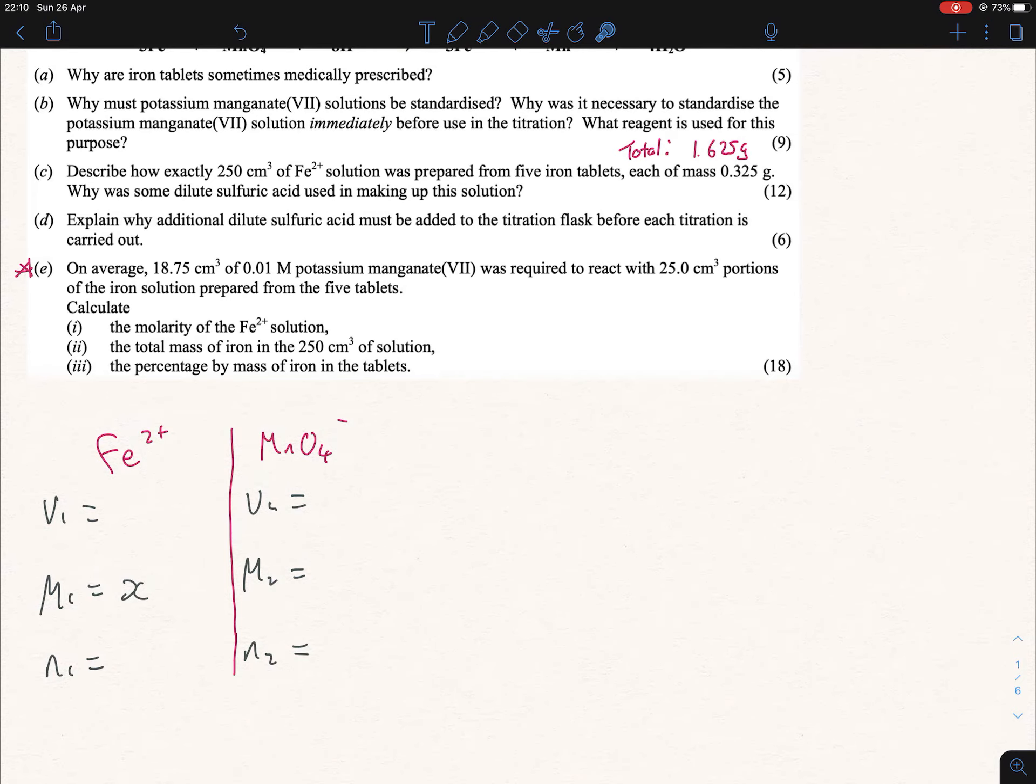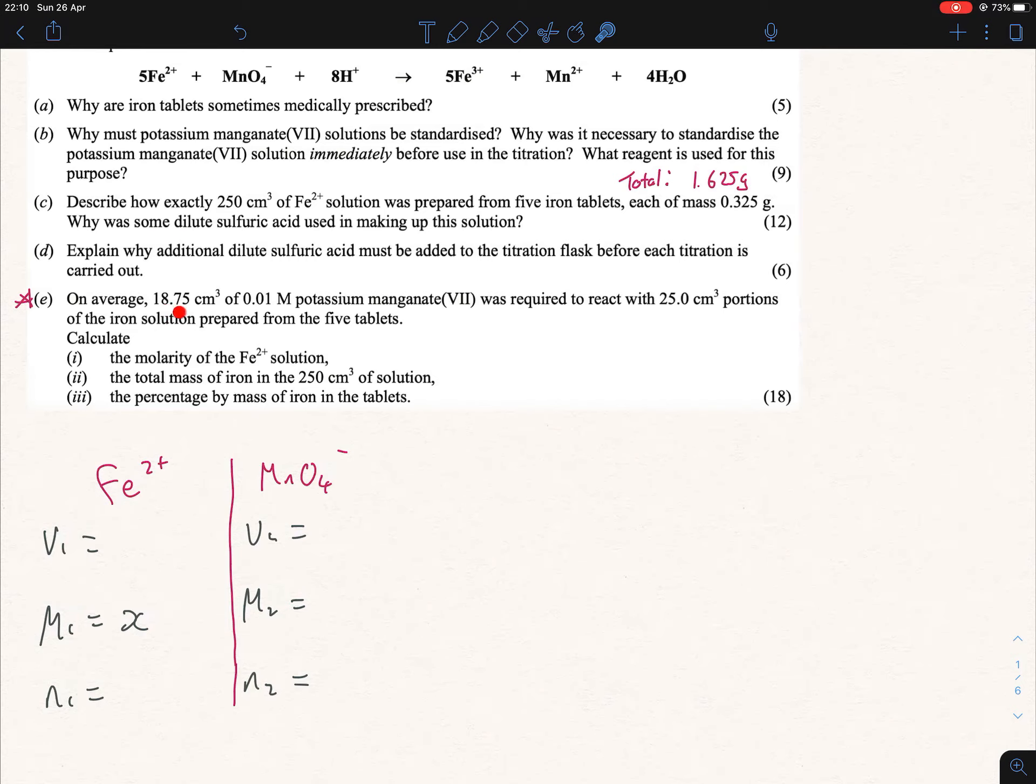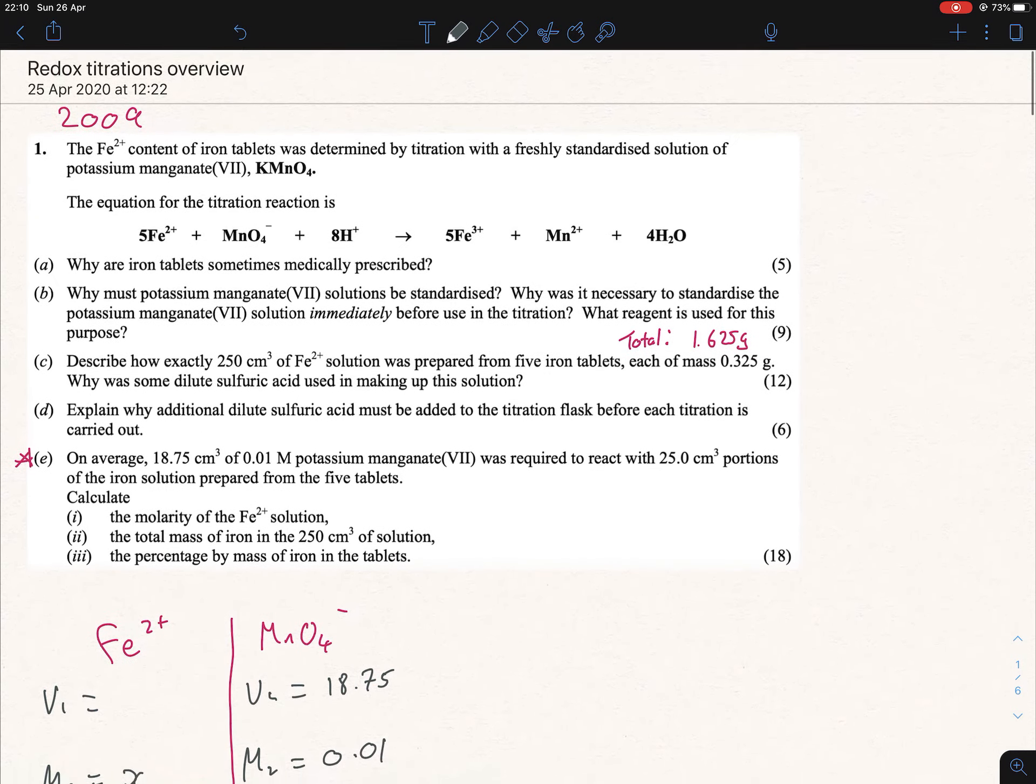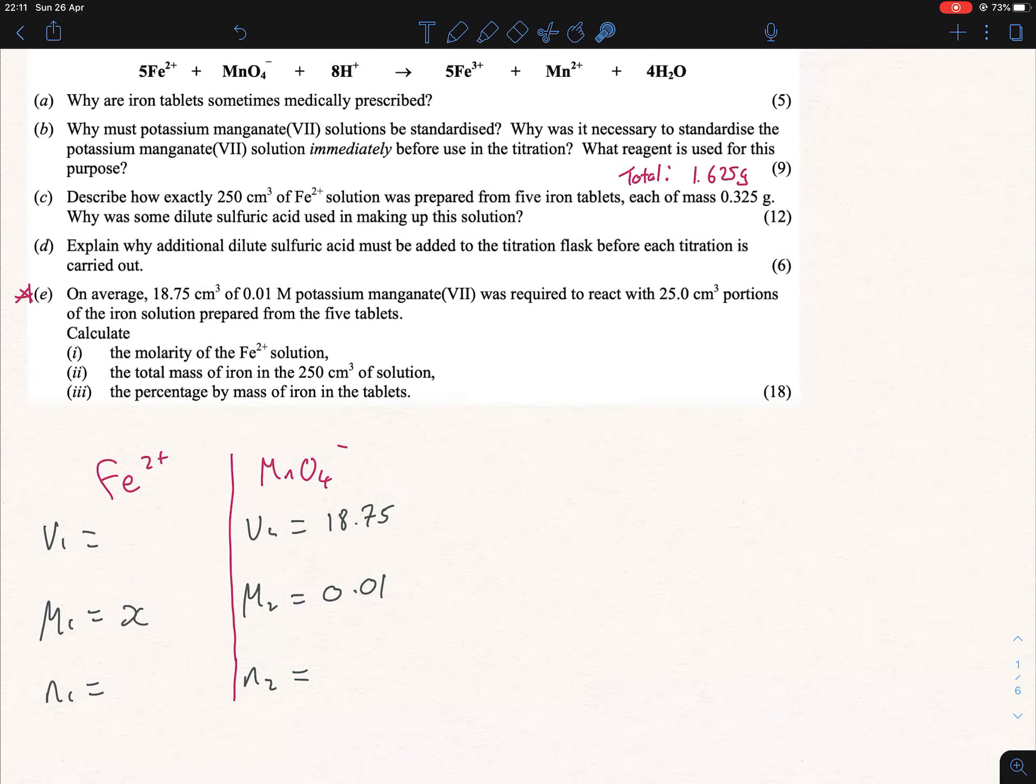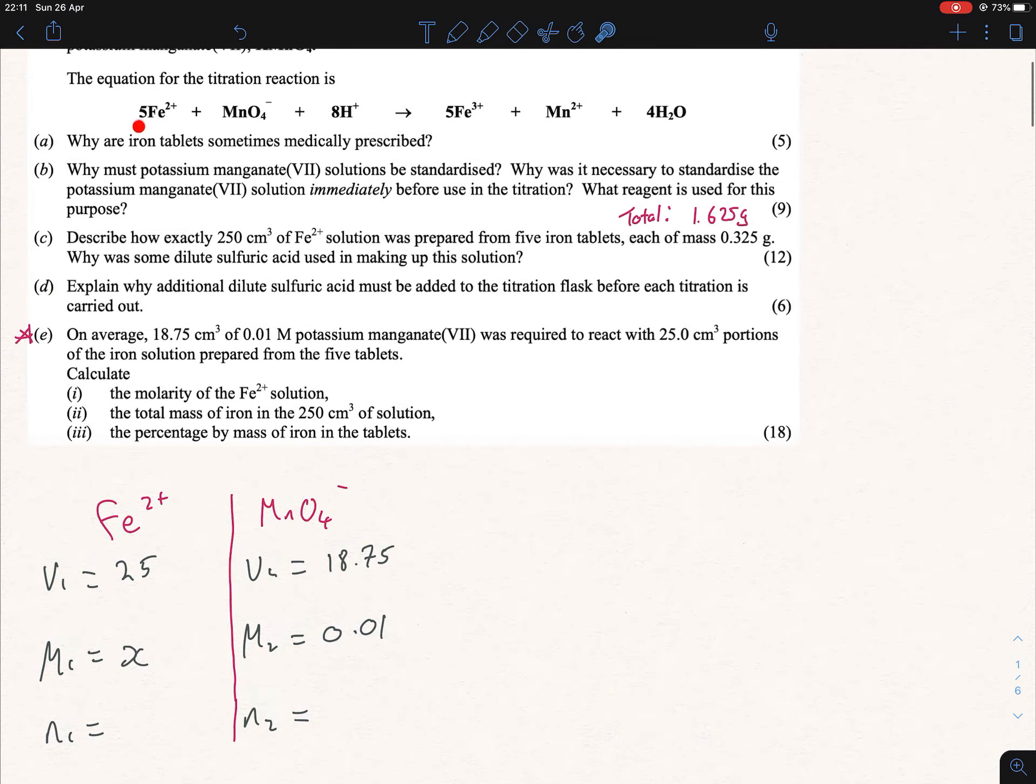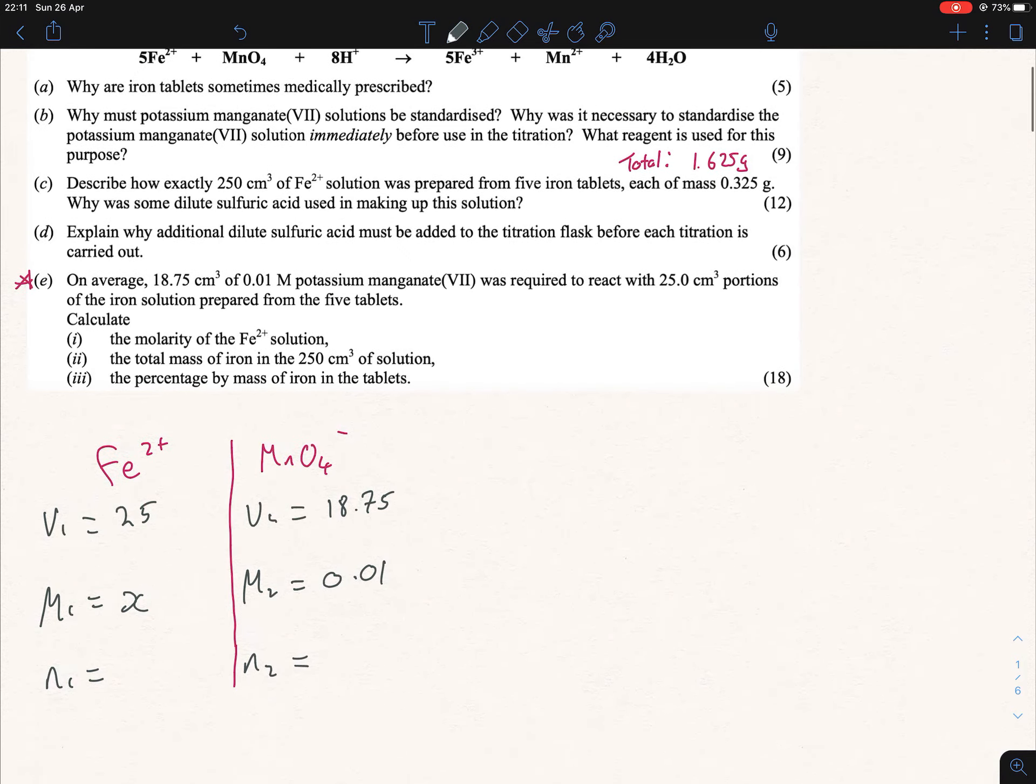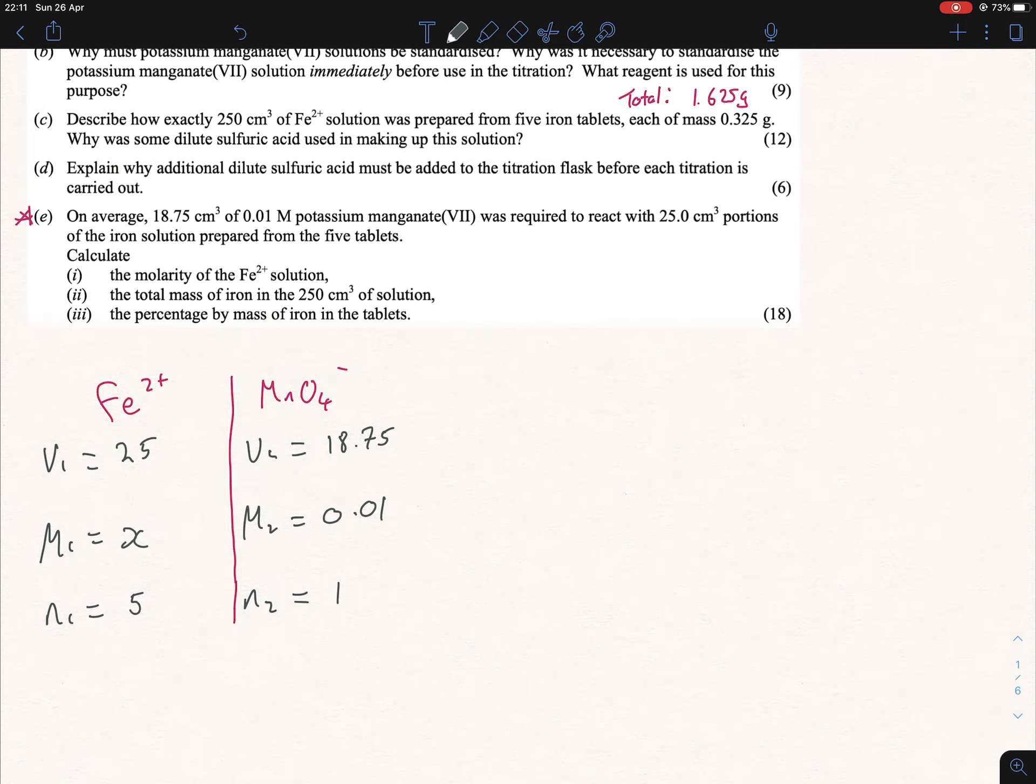From part E, reading that section: 18.75 cm³ of 0.01 molar potassium permanganate was used. So let's write that down: 18.75 of 0.01. It was required to react with 25 cm³ portions of the iron solution, so our iron solution is 25 mL. Our N's - that's just our ratio up here - we can see it's 5 to 1, so we actually have everything there.